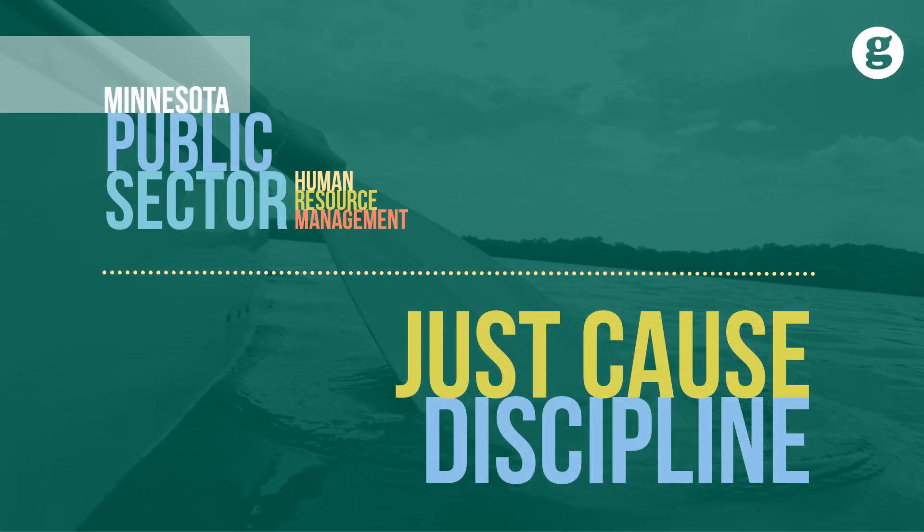A typical provision in a union contract will define when an employee may be disciplined. The most common discipline language provides an employee can only be disciplined for cause or just cause. These terms have been established and developed over decades of public and private sector labor cases and arbitration awards.